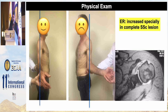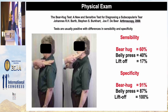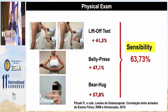In the physical exam, we observe increased external rotation, especially in complete subscapularis lesions and particularly in traumatic cases. All three tests are usually positive, with differences in sensitivity and specificity, but when you perform all three tests together, you achieve high sensitivity. So perform all three tests to ensure a good diagnosis.